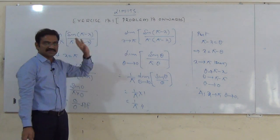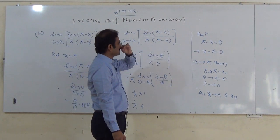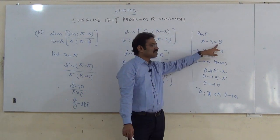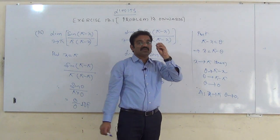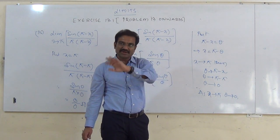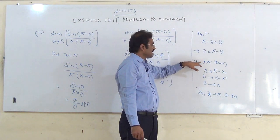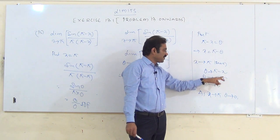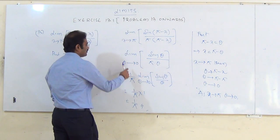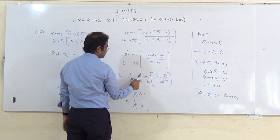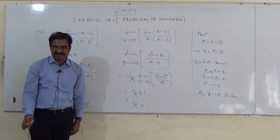This is very interesting. Once you make the substitution π − x = θ, you must change the limits: as x tends to π, θ tends to 0. Then sin θ / θ with θ tending to 0 gives 1, so the answer is 1/π.